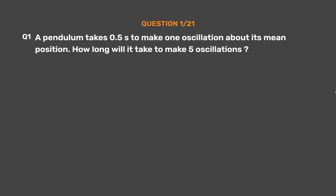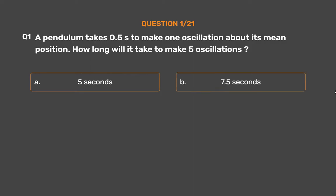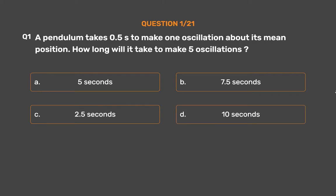Question No. 1. A pendulum takes 0.5s to make 1 oscillation about its mean position. How long will it take to make 5 oscillations? Option A: 5 seconds. Option B: 7.5 seconds. Option C: 2.5 seconds. Option D: 10 seconds.